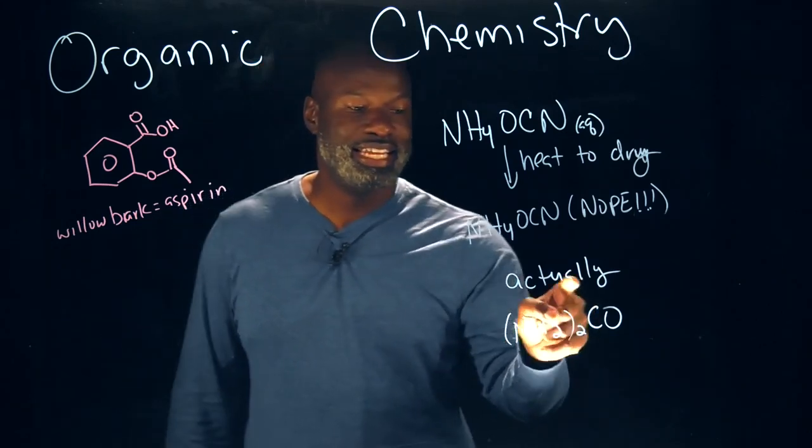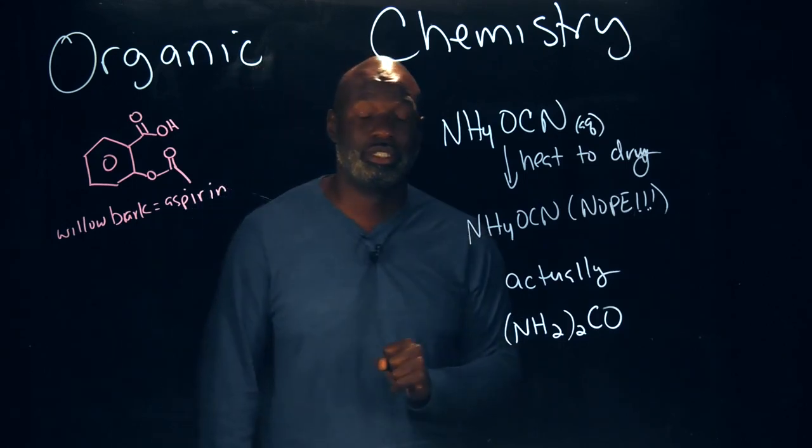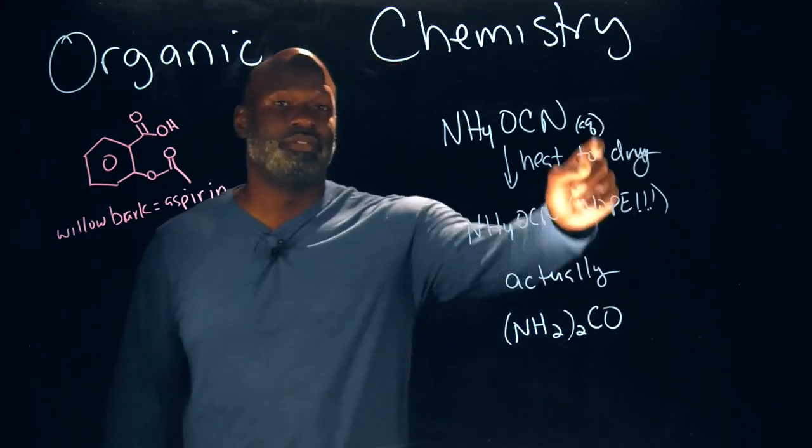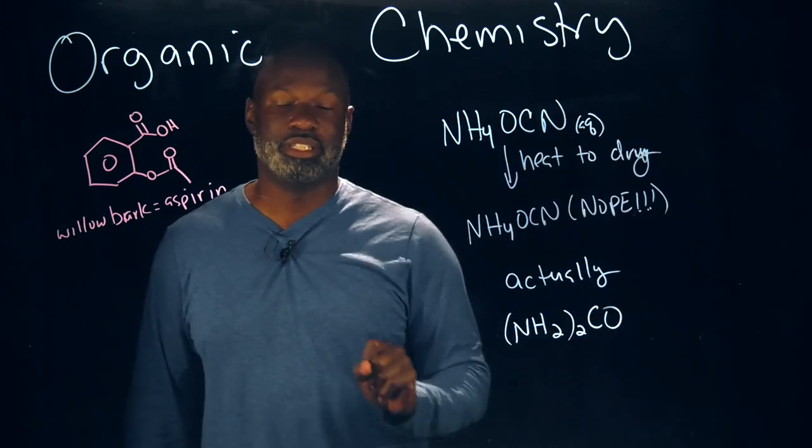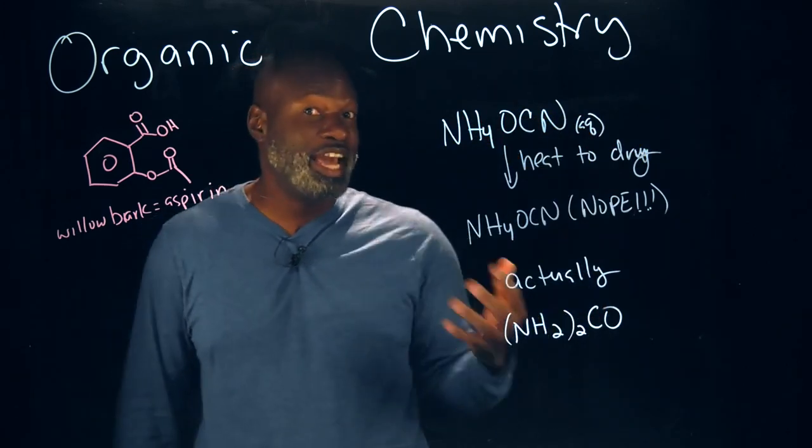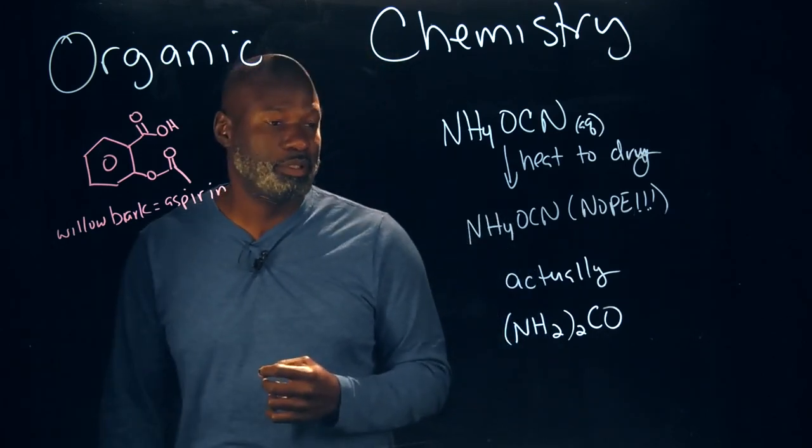But instead he got this compound and that compound is urea, which is an organic compound. So from an inorganic species came an organic species, which suggests that you can make an organic compound without it coming from an organic species.